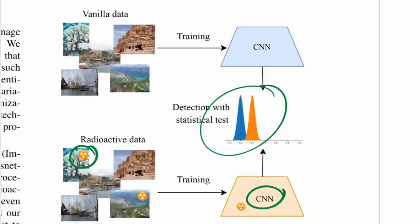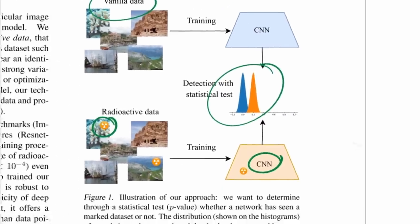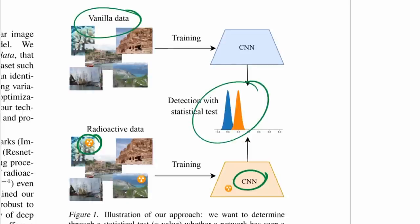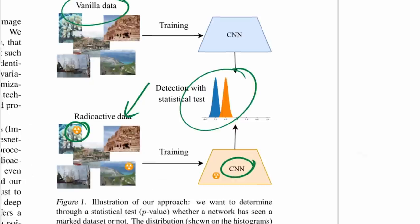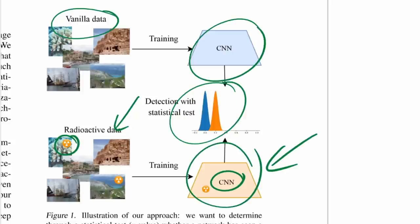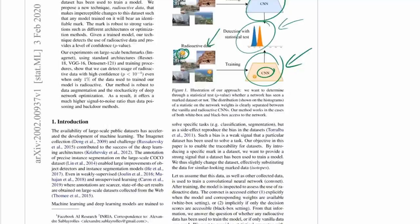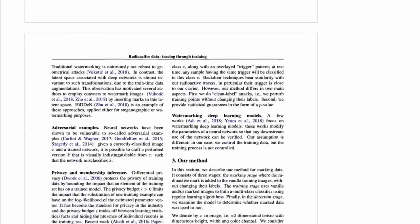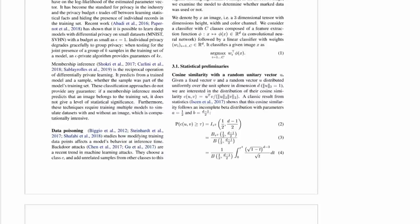You will see a clear difference compared to a network trained on only vanilla data — data that has not been marked. What you do is mark your data. What Eve does is train a network on data, and you don't know whether it's marked or not, and then you do a test to figure out which one it is. Pretty simple, but pretty cool.